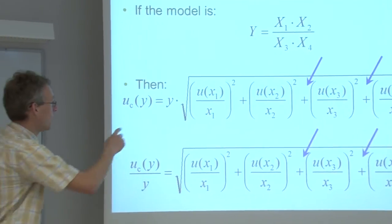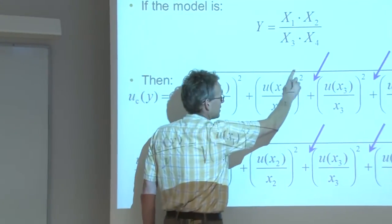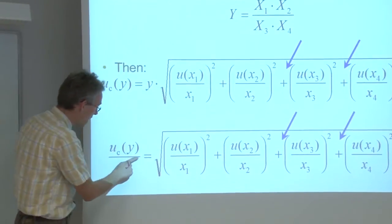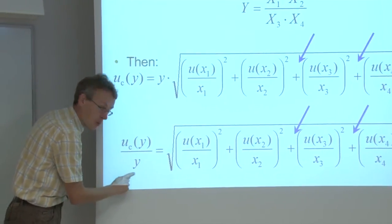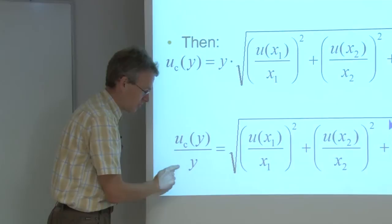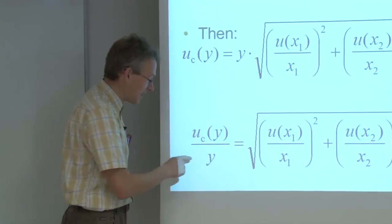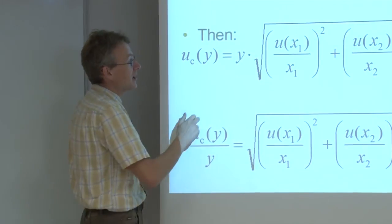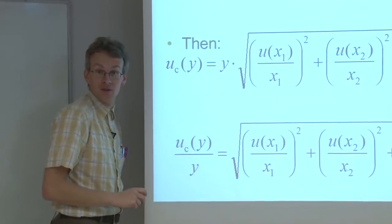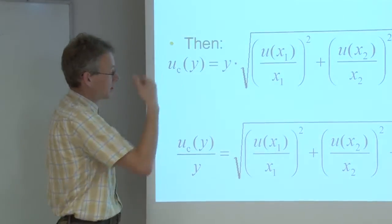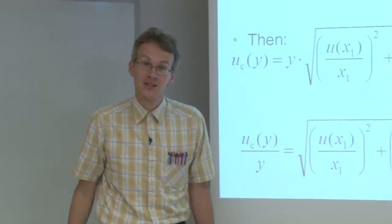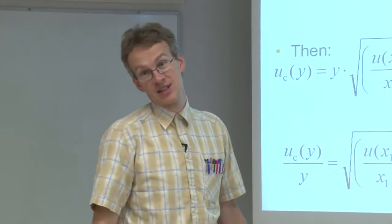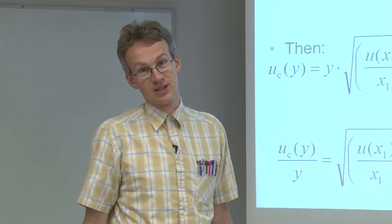And when this here is calculated, then this expression actually gives us the relative combined standard uncertainty of the output quantity. And this relative combined standard uncertainty of the output quantity can be multiplied by the value of the output quantity, so that we can get the combined standard uncertainty of the output quantity in the same units as this output quantity is measured in.